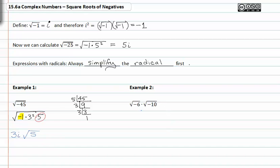In example two, I have the square root of negative six multiplied to the square root of negative ten. This is the same as the square root of negative one times six multiplied to the square root of negative one times ten.